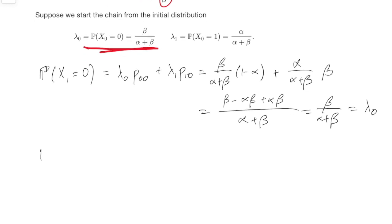Similarly, we could do the calculation for P(X1 equals 1), either by doing the calculation in the same way, or noting that probabilities have to add up to 1 to see that that will still be alpha over alpha plus beta equals lambda 1. So we picked lambda 0, lambda 1 as the initial distribution. The Markov chain moved on a state, and it was still the distribution.